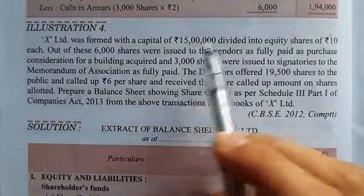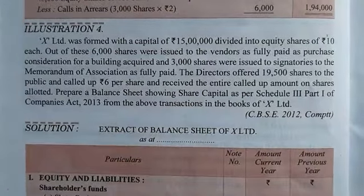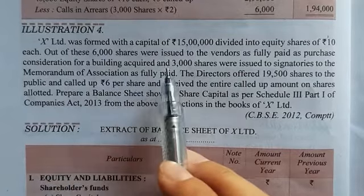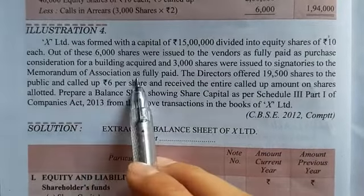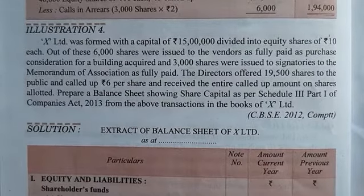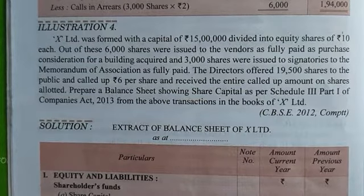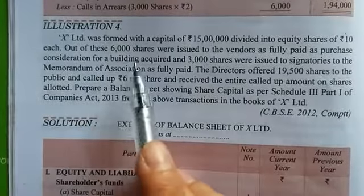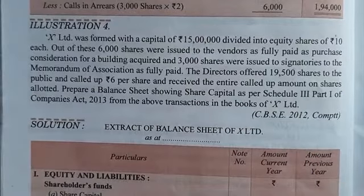Illustration 4: X Limited was formed with a capital of Rs. 15 lakh divided into equity shares of Rs. 10 each. Out of these, 6,000 shares were issued to vendors as fully paid as per purchase consideration for a building acquired, and 3,000 shares were issued to signatories to the memorandum of association as fully paid.